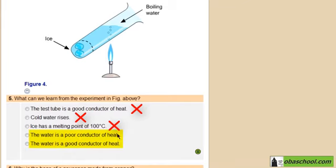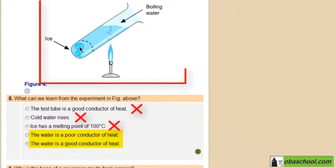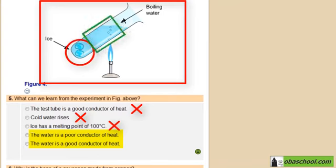These two choices remaining, the water is a poor conductor of heat or it's a good conductor of heat. Actually, if we focus on this figure, we will notice that there's ice, there's water, there's boiling water.